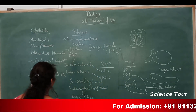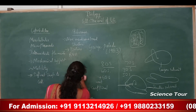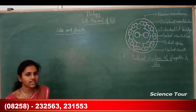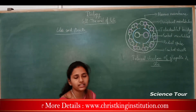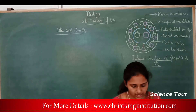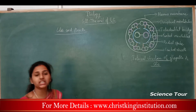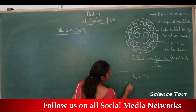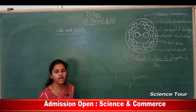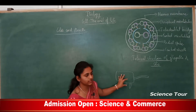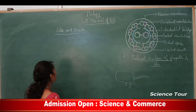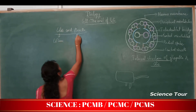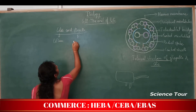Next, we will study one more important structure in eukaryotic cells: cilia and flagella. Cilia and flagella are the locomotory organelles of the cell. They are small hair-like outgrowths seen on the surface of the cell. Shorter outgrowths are cilia; longer outgrowths are flagella. The singular of cilia is cilium; the singular of flagella is flagellum.